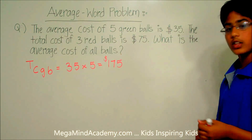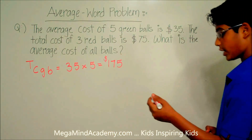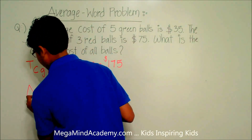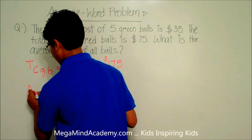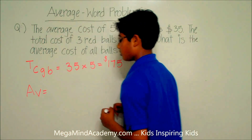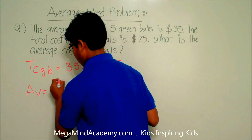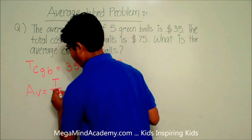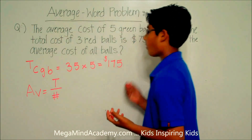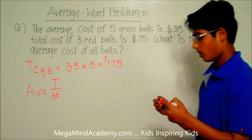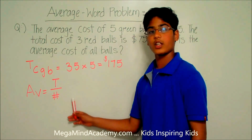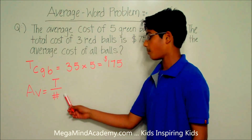Now, we know that the average is equal to — the average, AB — is equal to the total over the number of, in our case, balls. So, the total money that it costs over the number of balls.